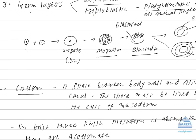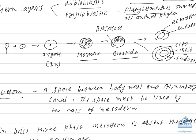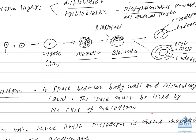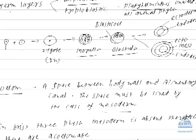Coelom. As I discussed first, coelom is a space between body wall and alimentary canal. But for calling a space as true coelom, it must be lined by the cells of mesoderm.